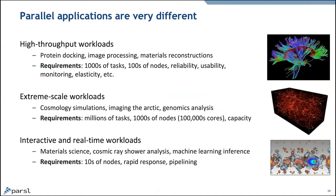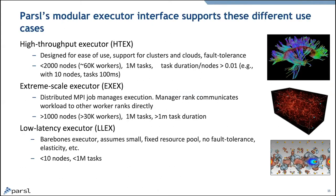Another thing we recognize is that there are different kinds of parallel applications people run — including high-throughput workloads like CERN or protein docking, with thousands of tasks and hundreds of nodes, where we care about reliability, usability, elasticity on clouds, and monitoring. We also have extreme-scale workloads running on hundreds of thousands or millions of cores on a single HPC system where we care more about capacity. And interactive and real-time workloads where rapid response matters. We couldn't build one execution environment that handled all of them well, so we have three different execution environments.